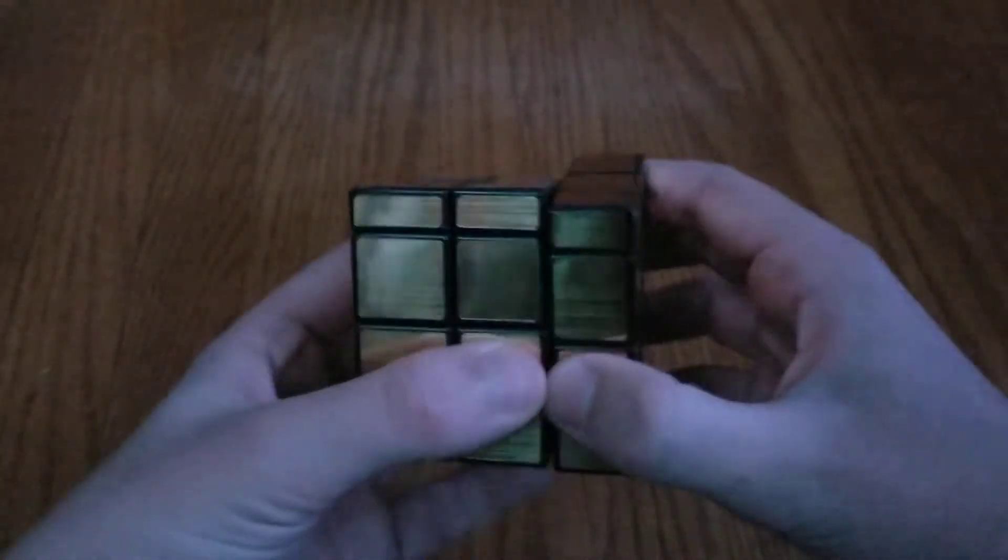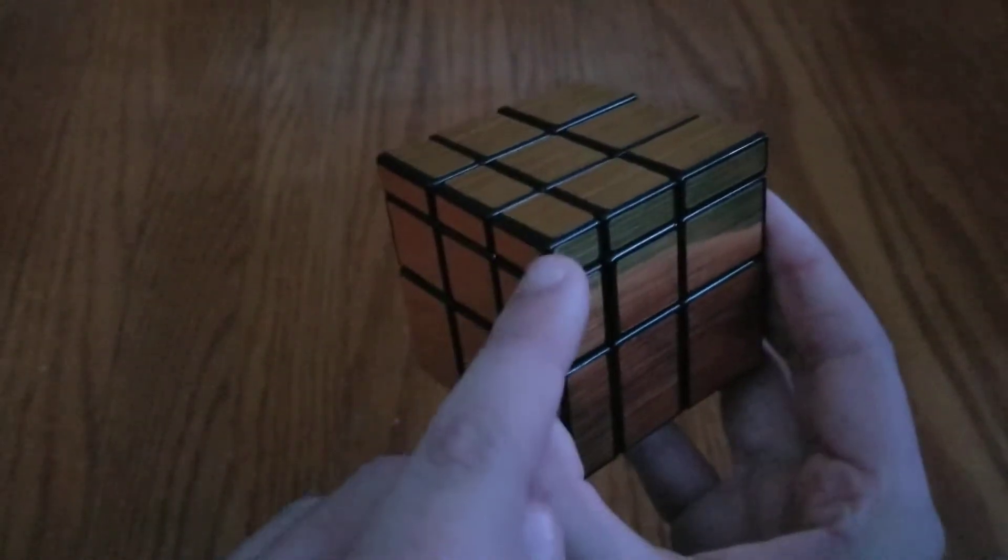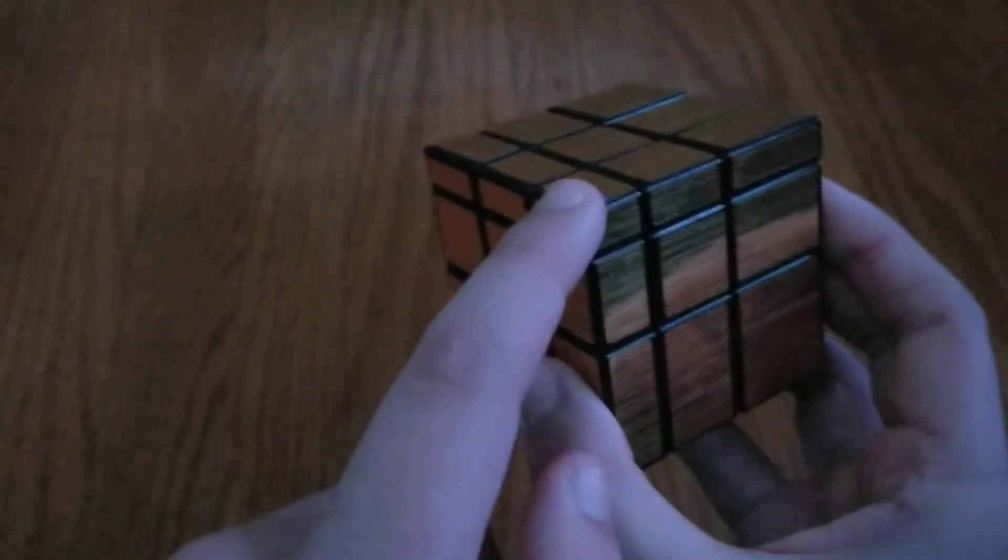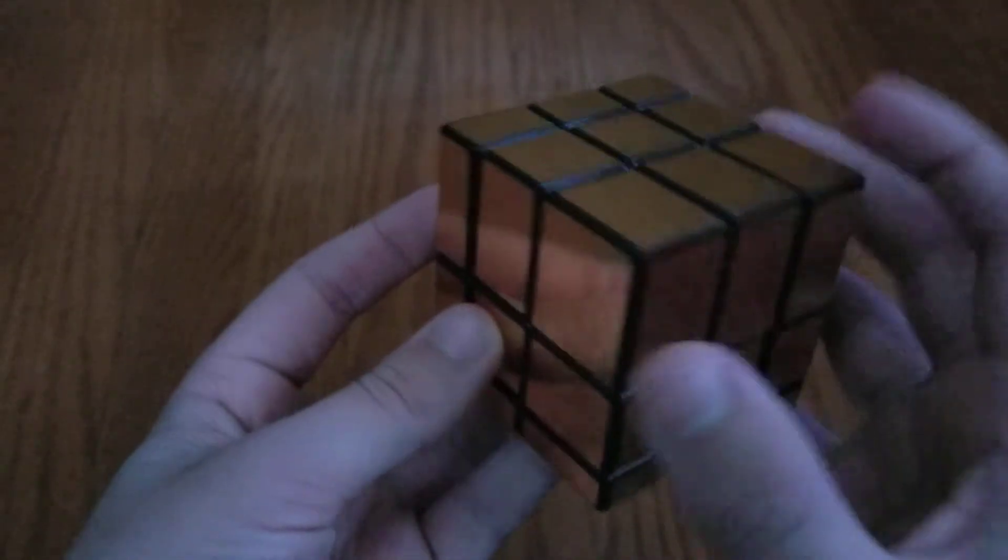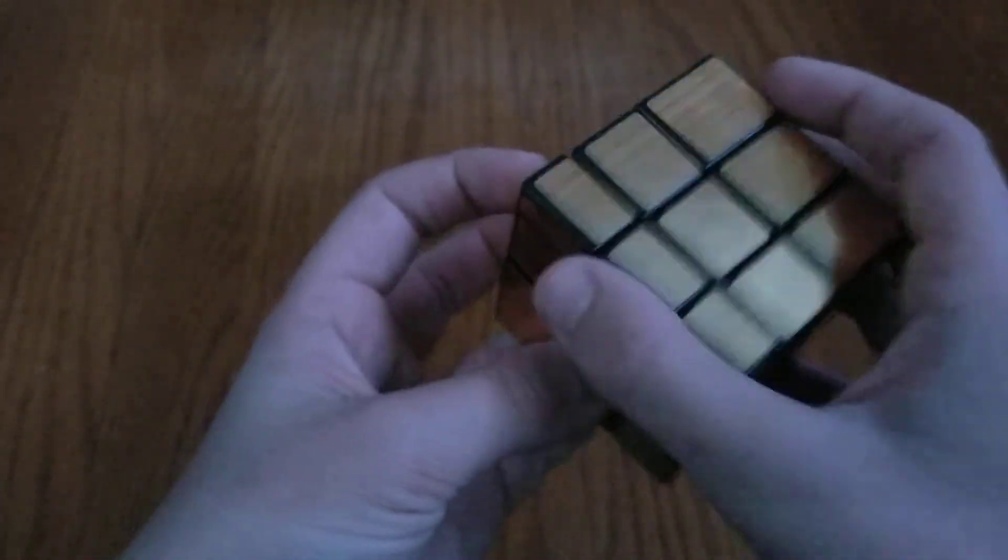And then to solve it, you have to put it back into a cube, and you can see it does that by having different size pieces. So you can see this piece is very small, this piece is very big, and the center pieces are in different intervals. You can see they're there, and then over here they're closer together.